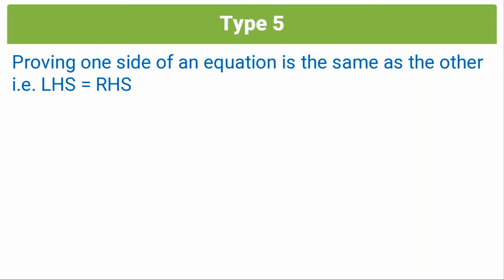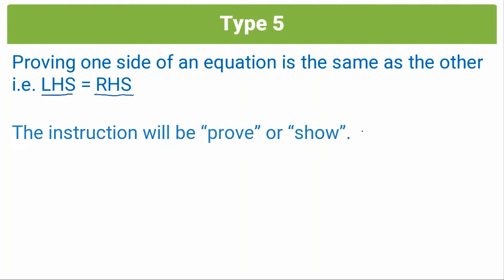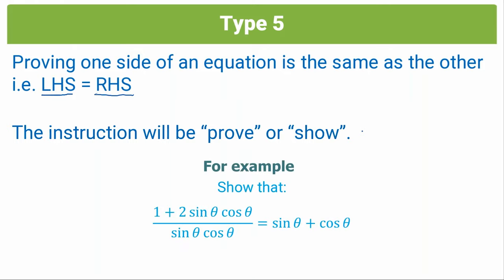In a type 5 question, you'll be asked to prove that one side of an equation is the same as the other — that the left-hand side of the equation is equal to the right-hand side. You'll have to prove that. The instruction you will be told is to prove or show something. So an example would be: we are asked to show — you can see the instruction here — we could also be asked to prove, and we have an equation with an equal sign, and we are asked to prove that the left-hand side equals the right-hand side.